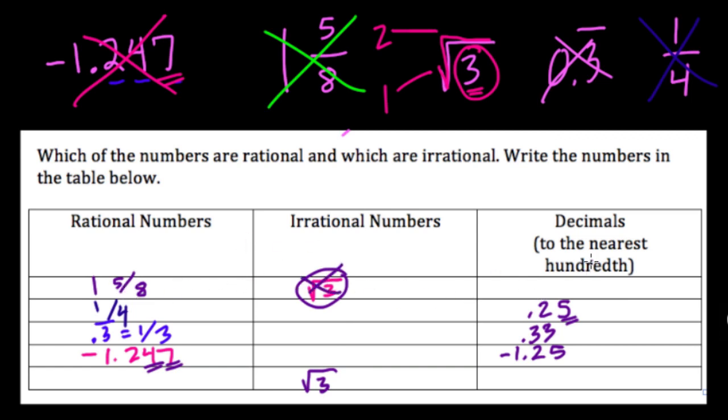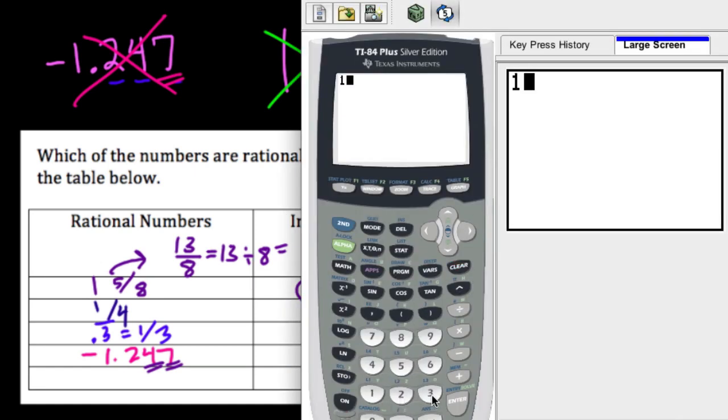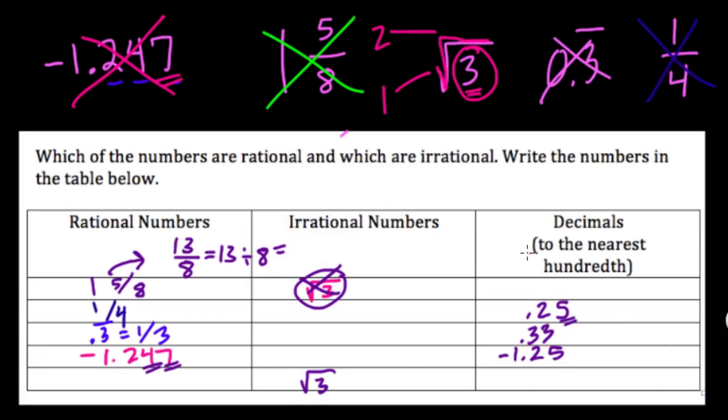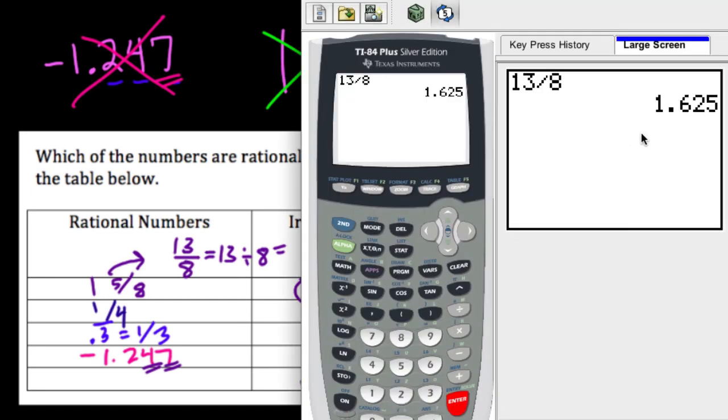Now, 1 and 5 eighths, we can round that as a decimal to the nearest hundredth. So you will probably have a calculator on a part like this. But even if you didn't, what I would do is rewrite this as an improper fraction. 8 times 1 is 8, plus 5 is 13. And then to write this as a decimal, I would solve 13 divided by 8. I would do the long division. But if you have a calculator, right, you can just set it up. 13 divided by 8. And it will give you your decimal. 1.625. So here, again, we use that 5 to round the 2 up to a 3. So we should get 1.63. And just double-check, we have 1.63.